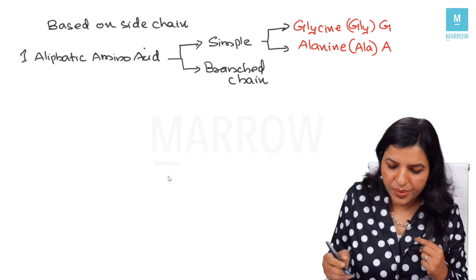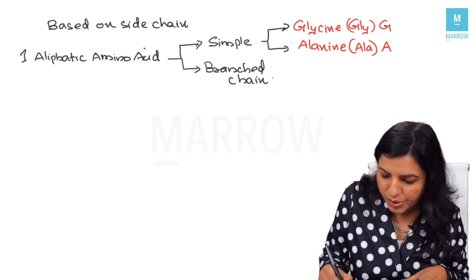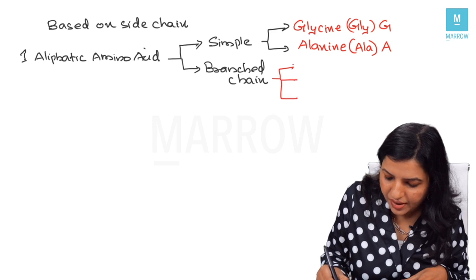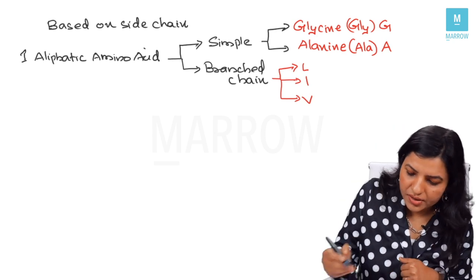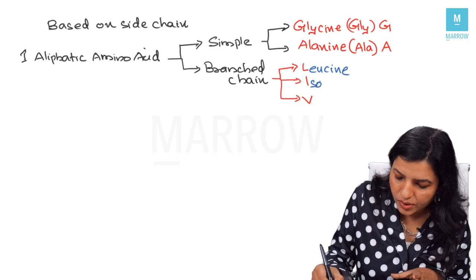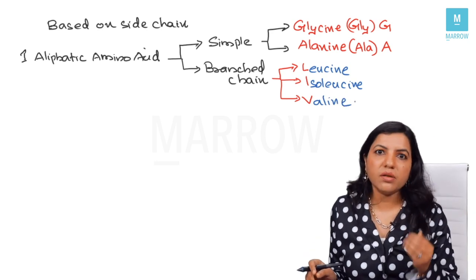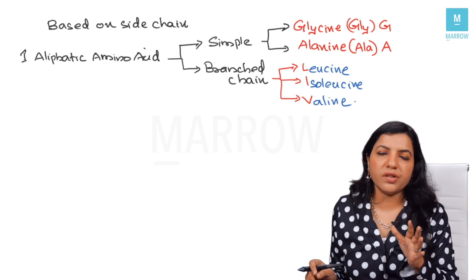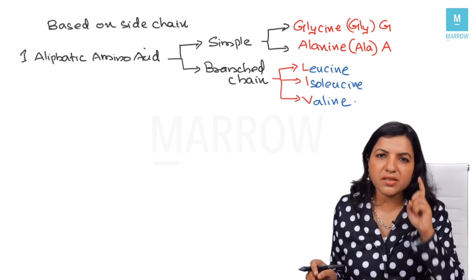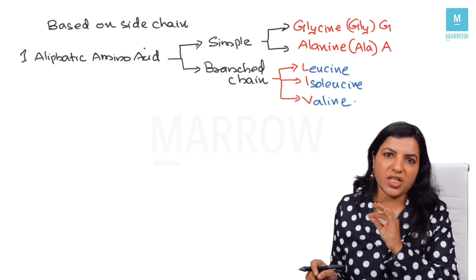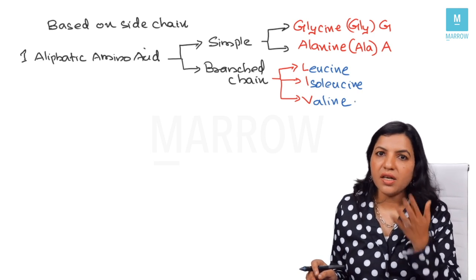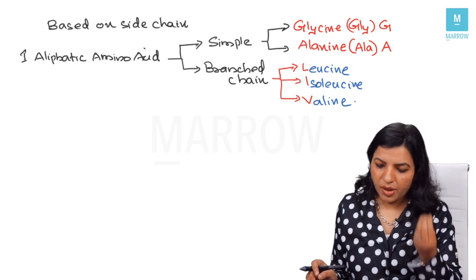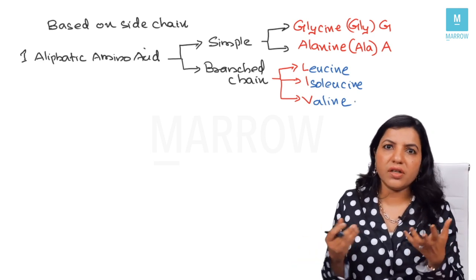The branched chain amino acids I remember as L, I, V — leucine, isoleucine, and valine. These are called the branched chain amino acids. You do not have to learn the structure of all of them. Just know one thing: when you see a branch in the side chain, it is a branched chain amino acid.